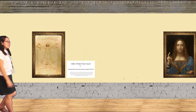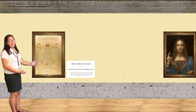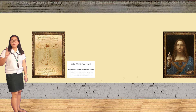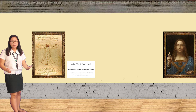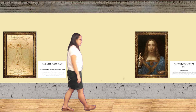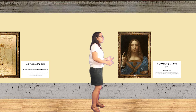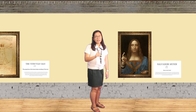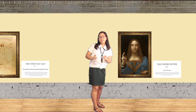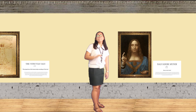The first painting is the Vitruvian Man. The medium Leonardo da Vinci used is ink. The Vitruvian Man explains the proportion of a human body according to Vitruvius. The second painting is Salvator Mundi, which means the savior of the world. The painting was made using oil on walnuts. Did you know that Salvator Mundi is the highest-paid painting, which cost 450.3 million US dollars?